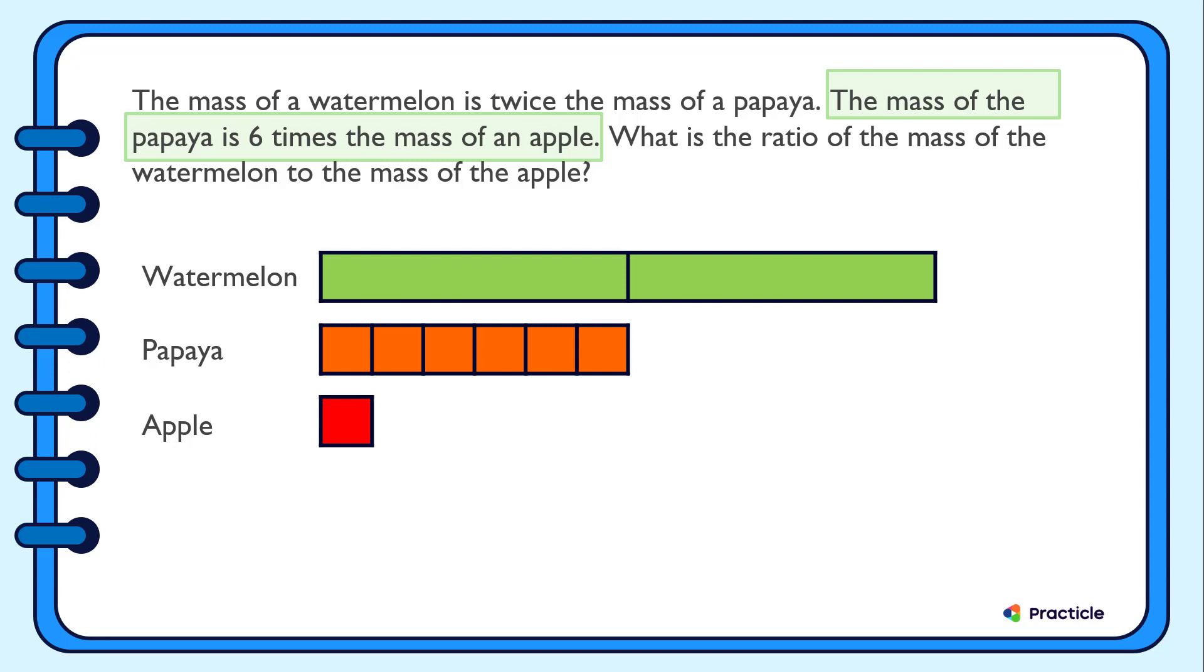Now what question are we supposed to solve? What is the ratio of the mass of the watermelon to the mass of the apple? Do you know which part of our model we need to look at? Since we are comparing the mass of the watermelon to the mass of the apple, we need to look at these two bars.